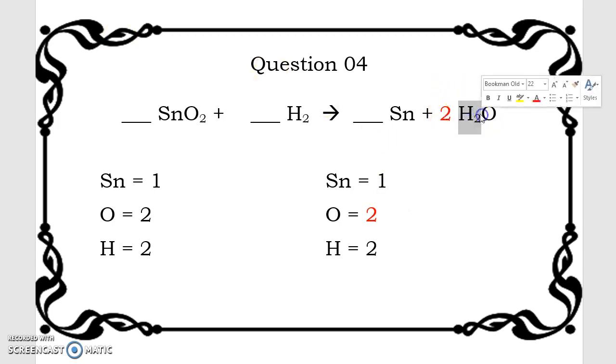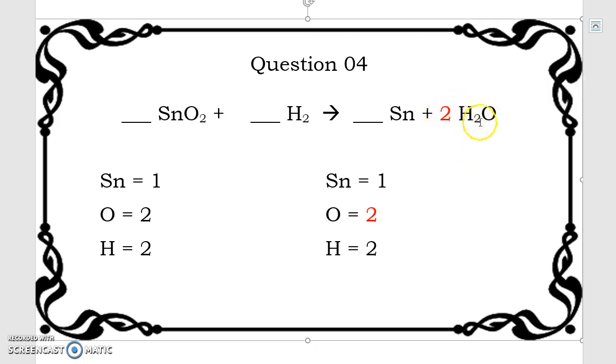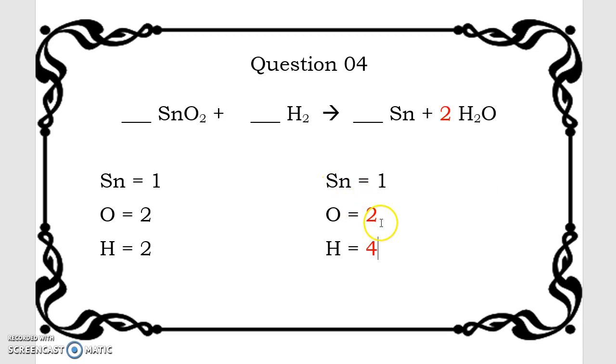We've also changed the hydrogens because they're in this molecule. So we say 2 times blank equals 2, or 2 times 2 equals blank. 2 times 2 equals 4.